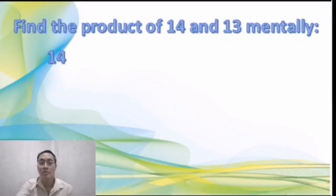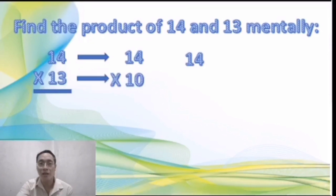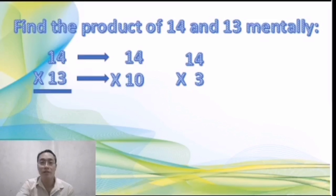Okay, so 14 times 13. You have to multiply 14 two times by the breakdown of 13, which is 10 plus 3. It's easier to multiply by 10, so that's why we break it down by 10.